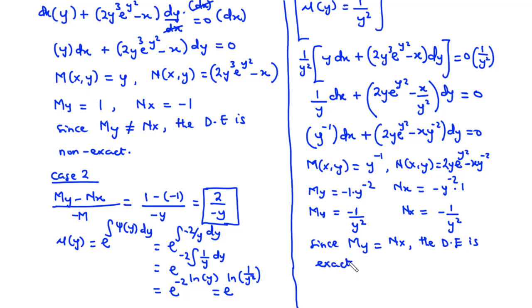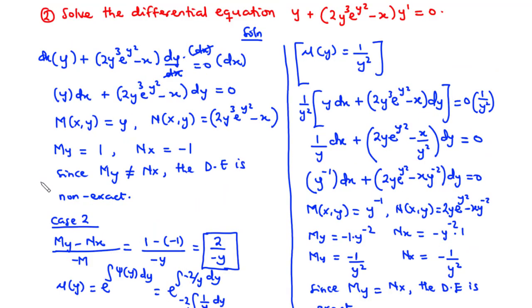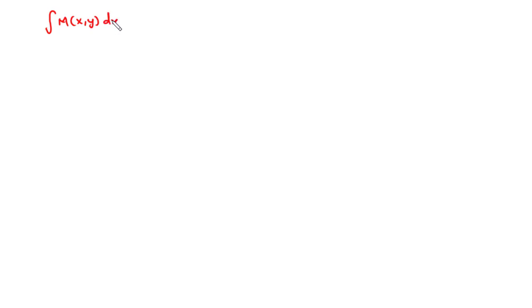Since it's exact, we integrate M(x,y) with respect to x and N(x,y) with respect to y, then merge the two functions. Integrating M equals y to the power negative 1 with respect to x: y to the power negative 1 is constant with respect to x, so we get x times y to the power negative 1, which is x over y.